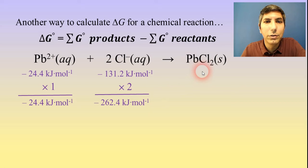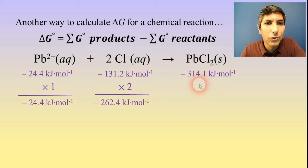Then on the lead two chloride, we can consult the thermodynamic data and see that its Gibbs free energy is negative 314.1. So there's only one mole of that, so that doesn't change. Well, now we can sum up the reactants and negative 24.4 and negative 262.4 add up to give us negative 286.8.